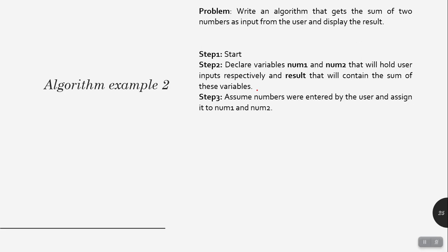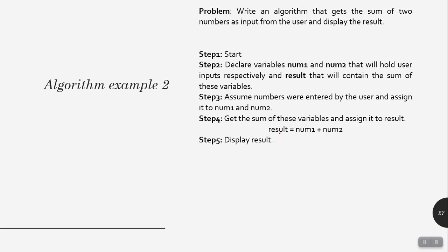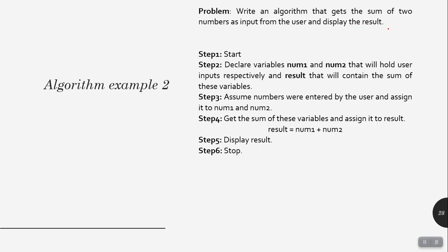Step 3: assume numbers were entered by the user and assign them to num1 and num2 — for example, num1 = 10 and num2 = 12. Step 4: get the sum of these variables and assign it to result, so result = num1 + num2, which is 10 + 12. Step 5: display the result, as the problem specification says we have to display the result. Step 6: stop the algorithm — meaning there are no more steps to follow.